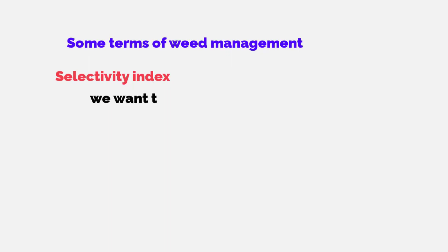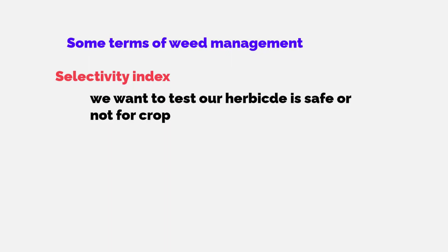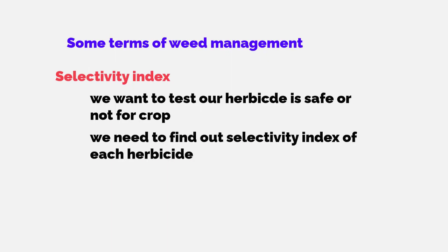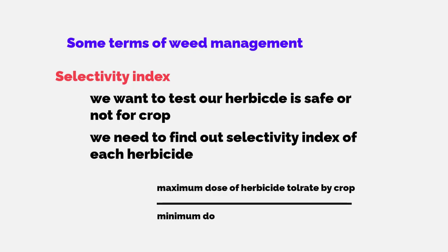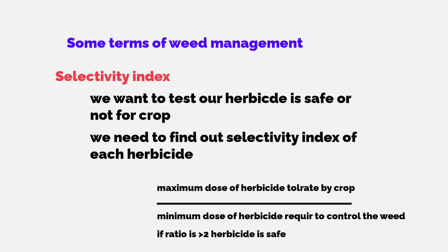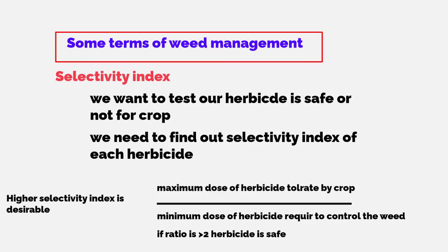The selectivity index is used to test whether a herbicide is safe for a crop. It is the ratio of the maximum dose of herbicide tolerated by the crop divided by the minimum dose required to control the weed. If the ratio is greater than two, the herbicide is considered safe. A higher selectivity index is always desirable.